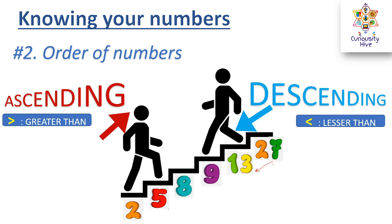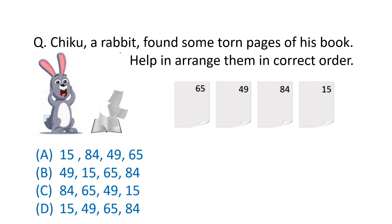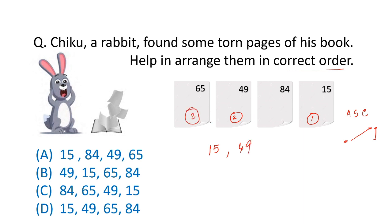Question: Shiku, a rabbit, found some torn pages of his book. Help arrange them in the correct order. We need to arrange them in ascending order, which is smaller to greater. So: 15 is the smallest, 49 is next, then 65, then 84. This order matches option D, which is our right answer.